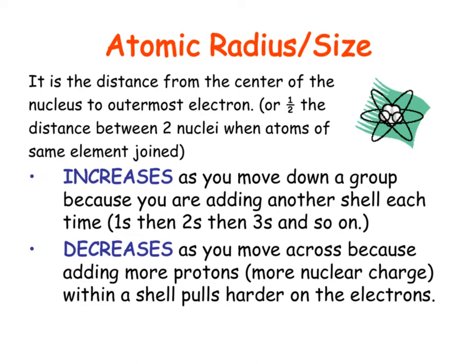The first trend is atomic radius — basically the radius of an atom from the nucleus to the outermost electron. As you go down a group, the atomic radius gets bigger. As you go across the same row, the radius gets smaller. As you go down, you're adding a whole other energy level.